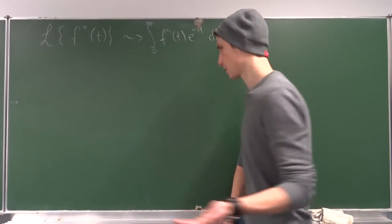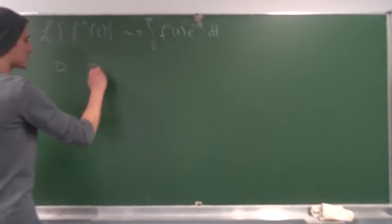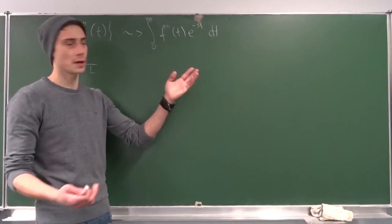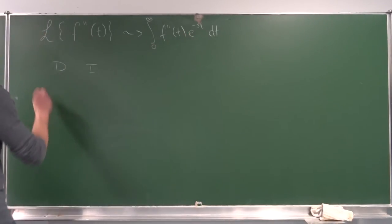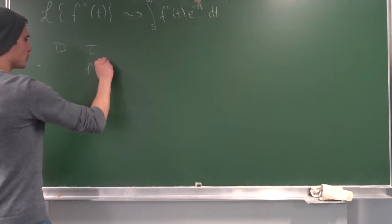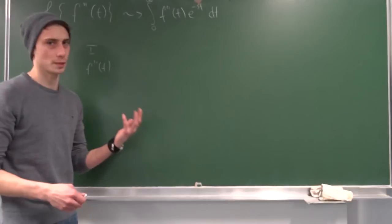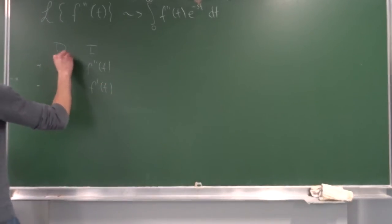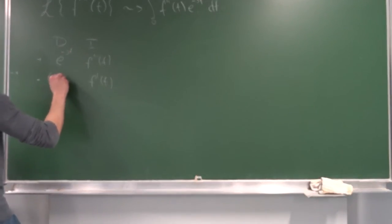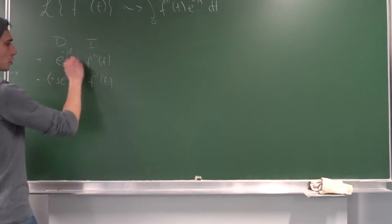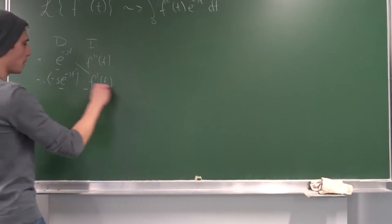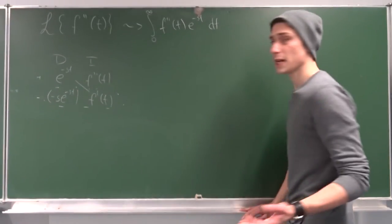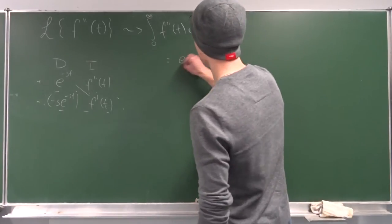As before, we are just going to use integration by parts for that. So we need something to differentiate and something to integrate. As always, we are going to integrate f''(t) and differentiate e to the minus st. So let's do that — we integrate f''(t) to get f'(t), and we differentiate e to the minus st to get minus s times e to the minus st. So what we end up with is e to the minus st times f'(t).